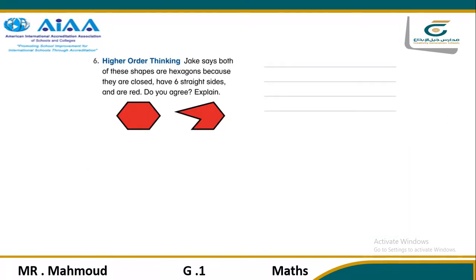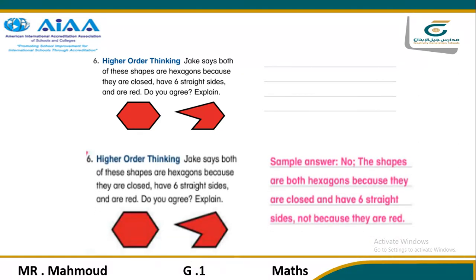Another question: Jack says both of these shapes are hexagons because they are closed, have six straight sides, and are red. Do you agree? Number one: are they closed? Yes. Number two: do they have six straight sides? Yes. Number three: are they red? This is not a defining attribute. The shapes are both hexagons because they are closed and have six straight sides — not because they are red. Color does not define any shape.